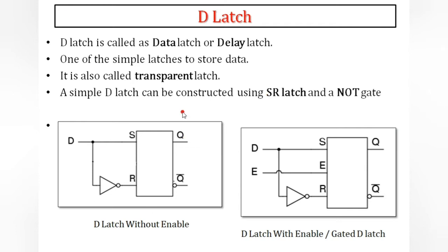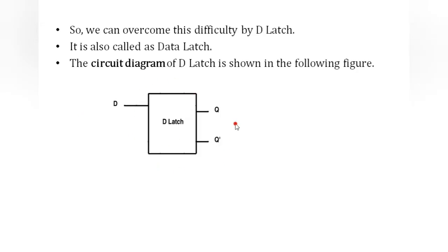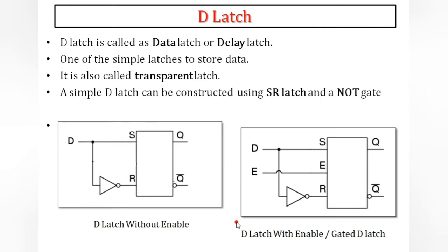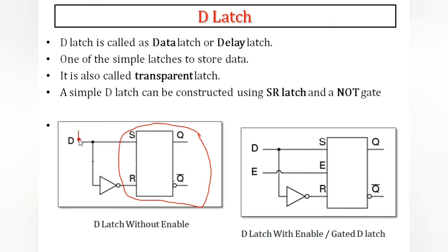Observe the D latch block diagram carefully. This part is nothing but SR latch. For this SR latch, a single input is taken — this single input is directly given to the S pin, and it is inverted and given to the R pin. So if the input is 1, then 1 goes directly to S and the inverted value 0 goes to R.